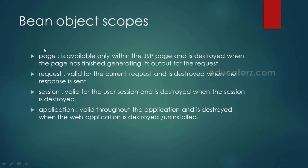There are four scopes for a bean object: page, request, session, and application. Page scope means the bean is available only within the JSP page in which it is created. Request scope is valid for the current request and is destroyed when the response is sent back. Session scope is valid for the user's session. Application scope is valid throughout the entire web application and is destroyed only when the web application is uninstalled.